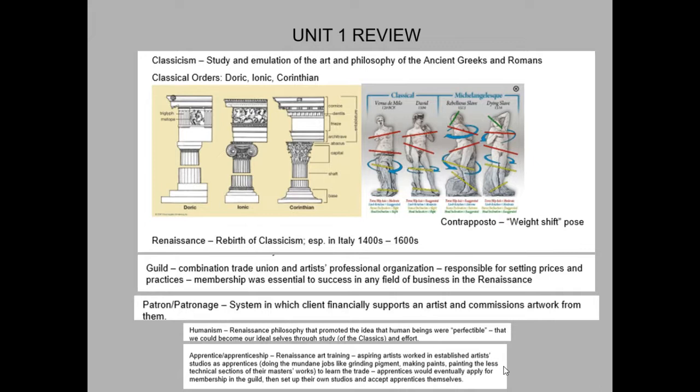The test is structured so you'll have 10 identifications. I'll choose 10 works from the pieces that were highlighted in red, which were also on the first slide of each lecture and are listed on the ID vocab review sheet. You'll have multiple choice options to select from to identify the correct sequence of artist, title, date, and relevant cultural information or vocabulary term.